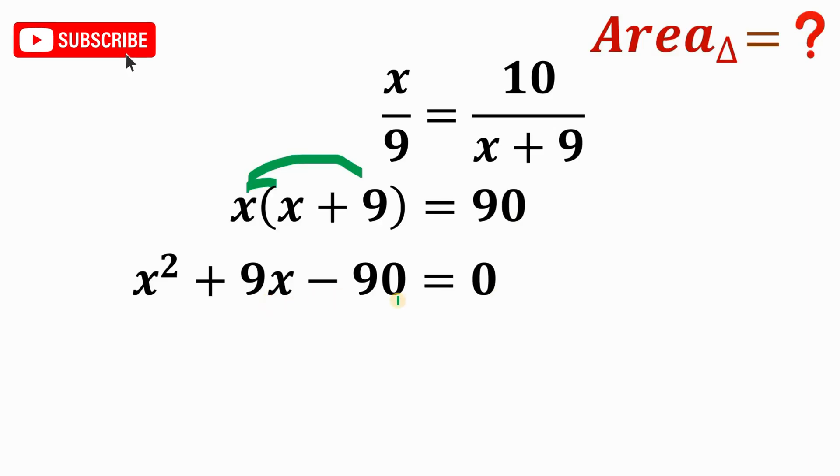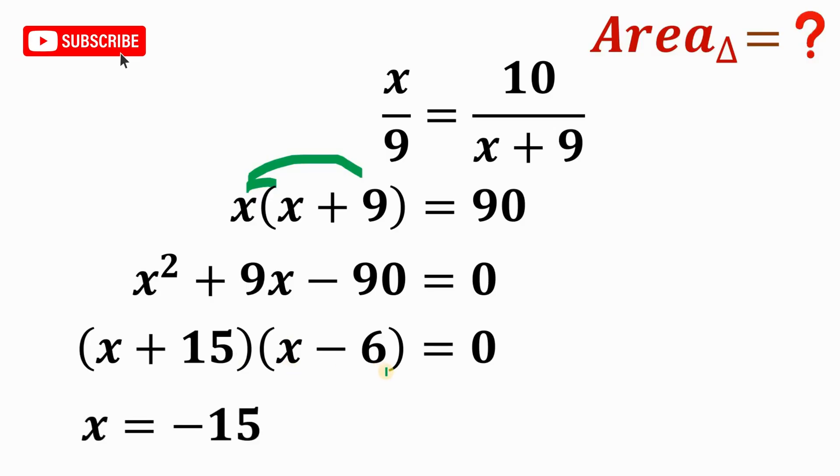Now, X squared plus 9X minus 90 is not hard to factor because if we factor this out, we get X plus 15 multiplied by X minus 6. Now, using the zero property, since the product is equal to 0, therefore, at least one of them must be equal to 0. So we can equate X plus 15 as 0. So we get X equals negative 15. And X minus 6 equals 0. We get X equals 6.